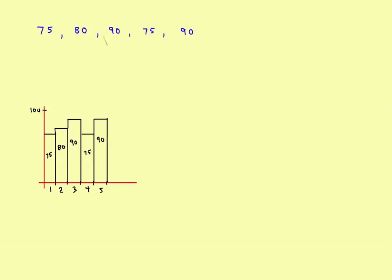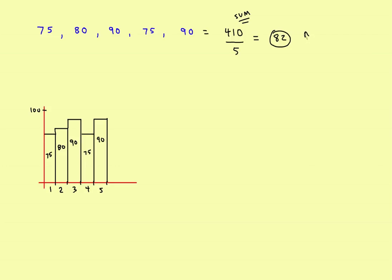Suppose you had five test scores and you wanted to find your average score. You've been doing this forever — add the five scores up to get the sum, then divide by the number of tests. Suppose you made a 75, an 80, a 90, a 75, and a 90. Adding them all up gives you 410. That's the sum of all your scores. Divide by 5 and you get 82, your average score.